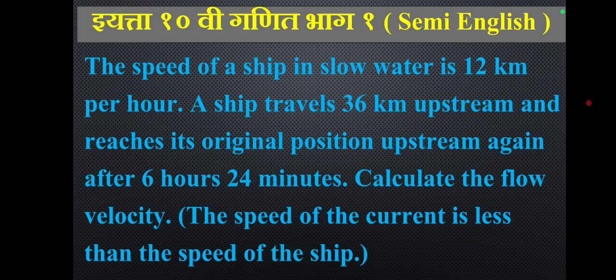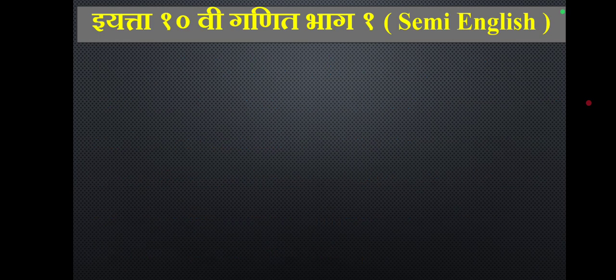The speed of a ship in still water is 12 km per hour. The ship travels 36 km upstream and returns to its original position after 6 hours 24 minutes. Calculate the flow velocity. Note: the speed of the current is less than the speed of the ship.